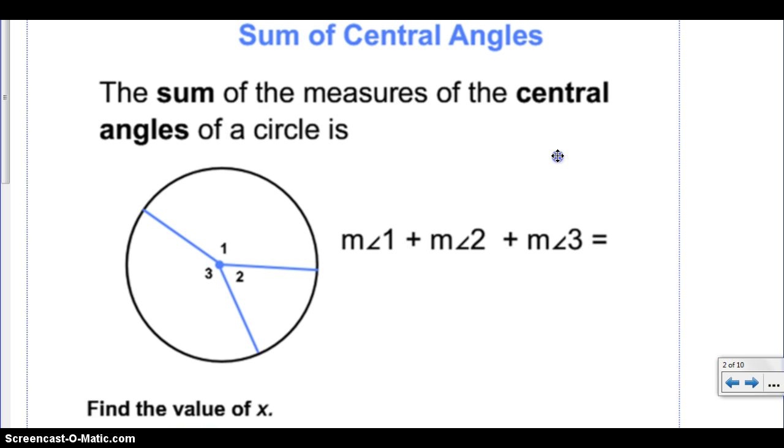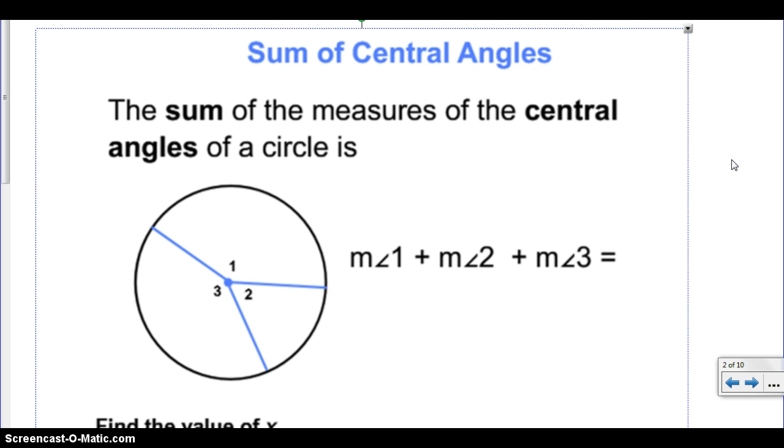Now, what we are going to be discussing now is called the sum of the central angles. If you look at the sum of the central angles, in any circle, you should know that in any circle, all the degrees should always add up to 360. That's correct, 360 degrees. So if you look at this circle below, if I were to add up these three central angles, what do you think they should add up to? 360. 360 be correct.